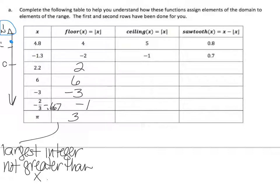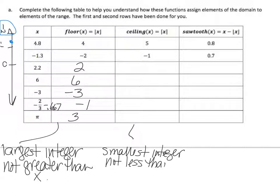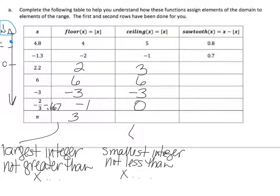The ceiling of a real number x is the smallest integer not less than x — so we need something bigger than x. For 4.8, that's 5. For negative 1.3, bigger is going to be negative 1. 2.2 would be 3. 6 is still 6. Negative 3 is still negative 3. Negative 2/3 needs to go the other way on the number line. And pi is going to be 4.